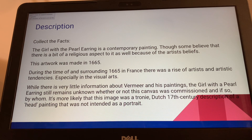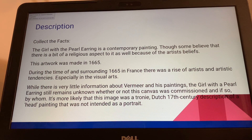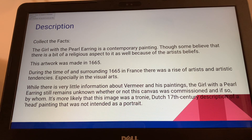While there is some literal information about Vermeer and his paintings, Girl with a Pearl Earring still remains unknown as to whether the canvas was commissioned, and if so, by whom. It's more likely that this image is a tronie — a Dutch 17th century description of a head painting not intended as a portrait.